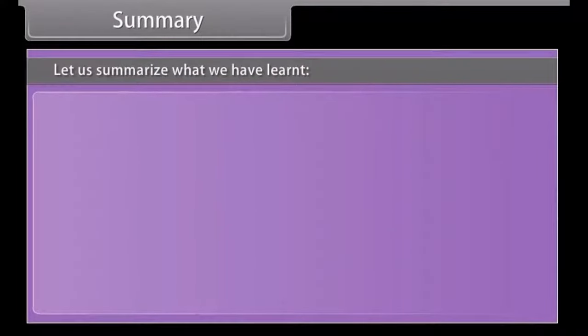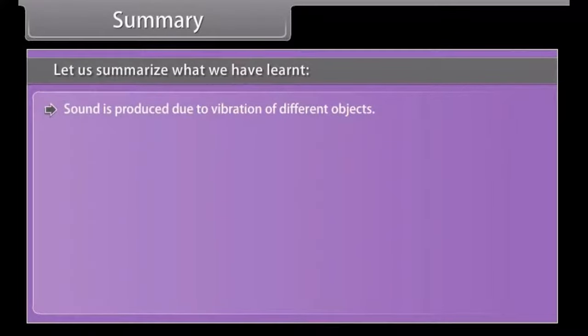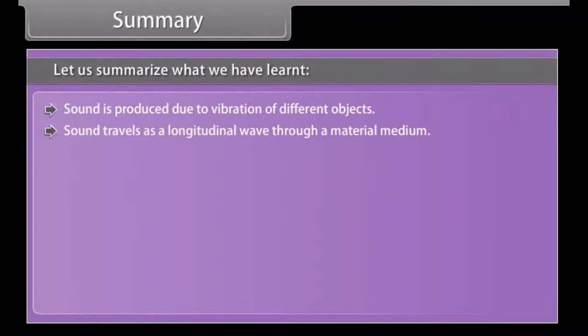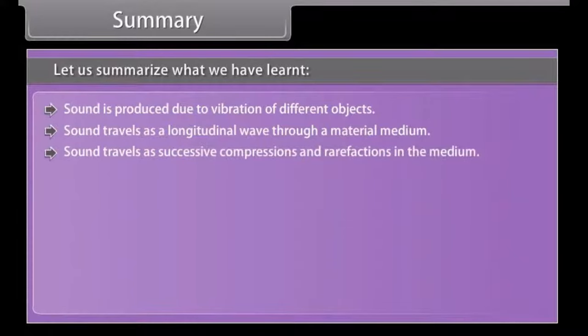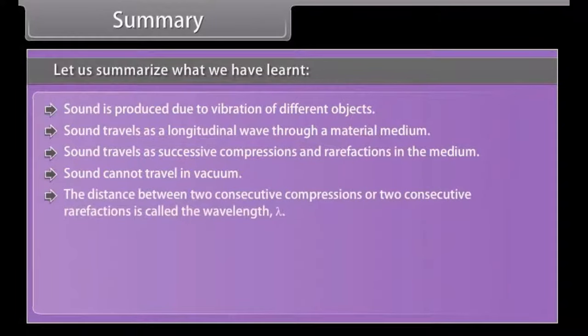Summary. Let us summarise what we have learnt. Sound is produced due to vibration of different objects. Sound travels as a longitudinal wave through a material medium. Sound travels as successive compressions and rarefactions in the medium. Sound cannot travel in vacuum.